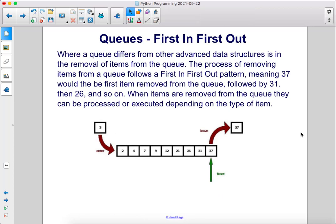Where a queue differs from other advanced data structures is in the removal of items from the queue. The process of removing items from a queue follows a first-in, first-out pattern, meaning 37 would be the first item removed from the queue, followed by 31, then 26, and so on. When items are removed from the queue, they can be processed or executed depending on the type of item.